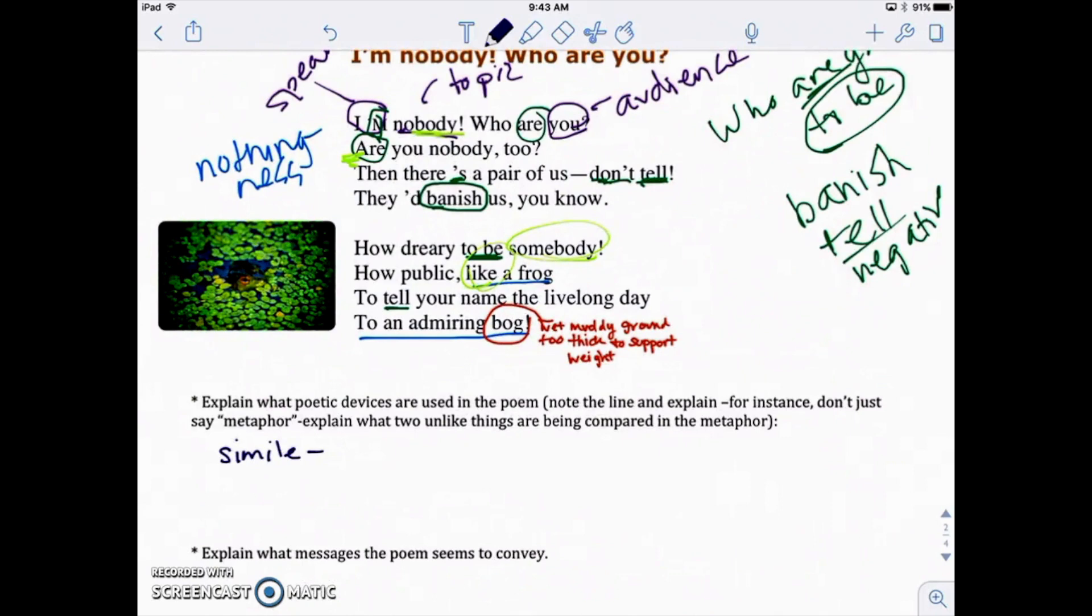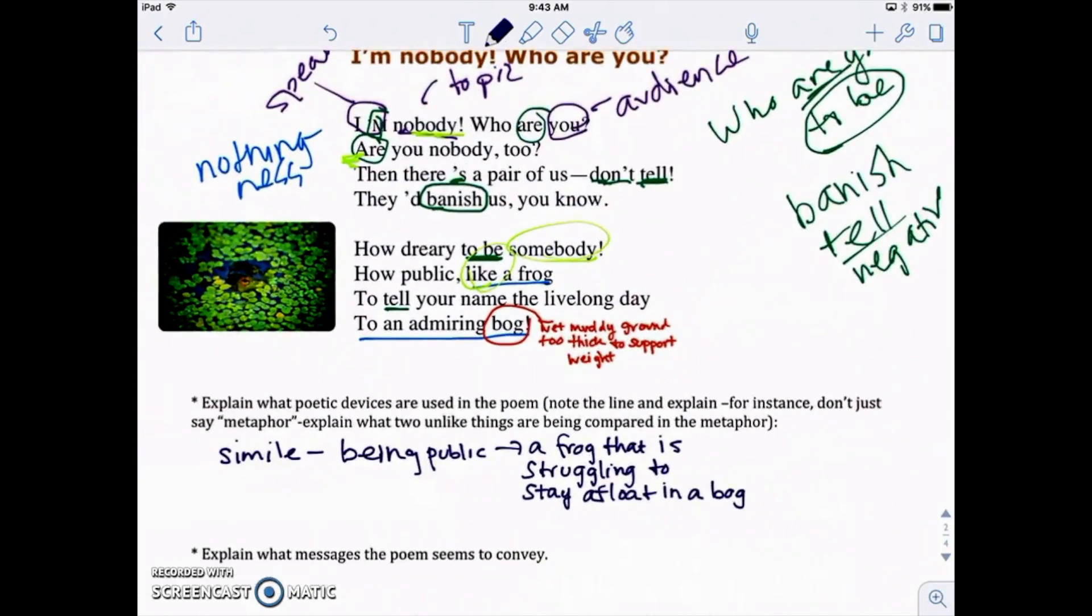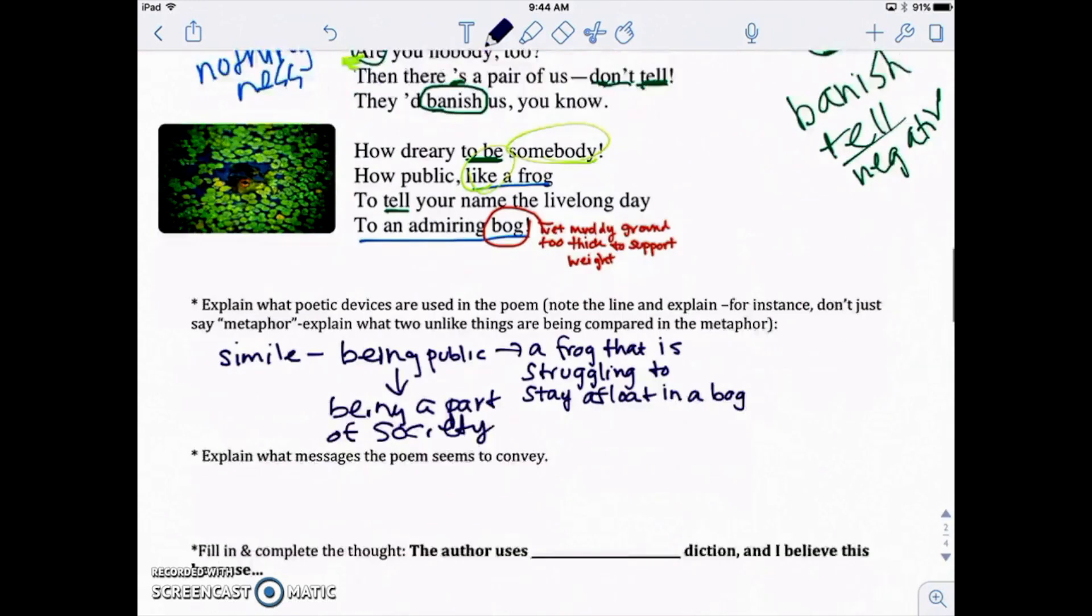We have to identify what's being compared here. Okay. How dreary to be somebody, how public like a frog to an admiring bog to tell your name, the live long day. So to be public, we're comparing being public to a frog that is struggling to stay afloat. Okay. So we're comparing being public, being a part of society. I could even say that, right. Being a part of society is like a frog that's struggling to stay afloat in a bog. So we can kind of, at this point, understand that the point of her poem here is that being public, being a part of society is a struggle, but it doesn't feel natural. It doesn't feel good. It's, it feels like they're against you.